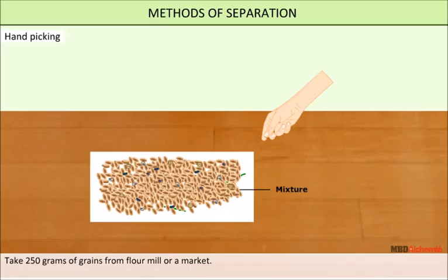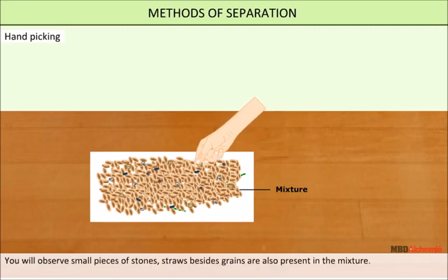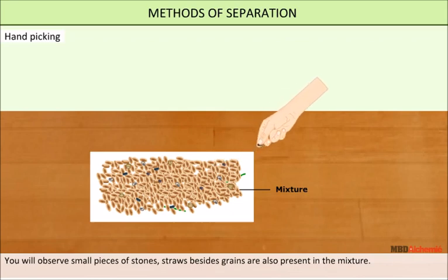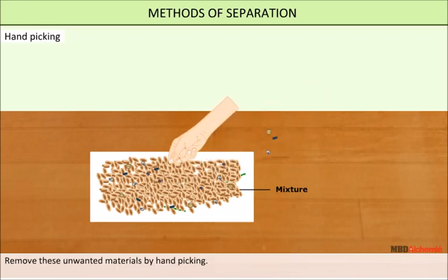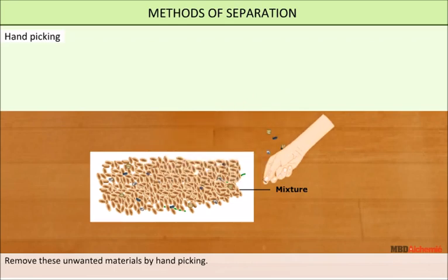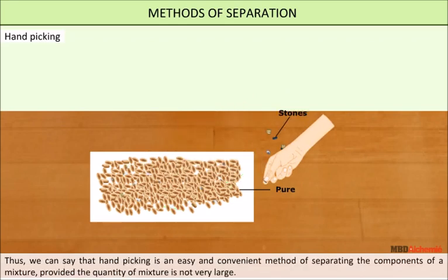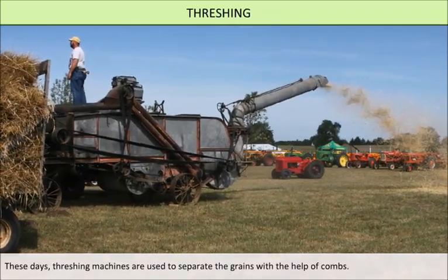Take 250 grams of wheat grains from a flour mill or market and spread them on a white sheet of paper. You will find there are small pieces of stone, straw, and some other grains in addition to wheat. Remove these unwanted grains to obtain clean wheat grains. Thus, hand picking is a convenient method of separation, provided the quantity of mixture is not very large. These days, threshing machines are used to separate grains with the help of combs.